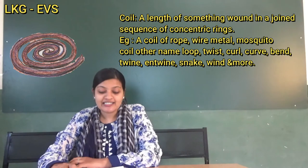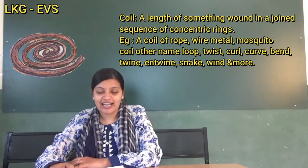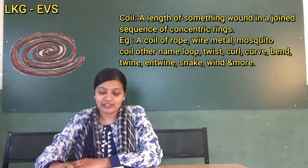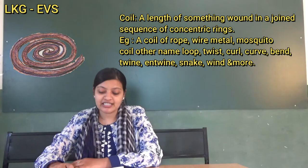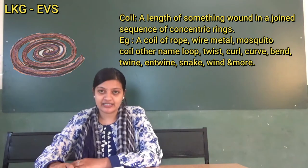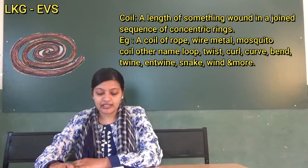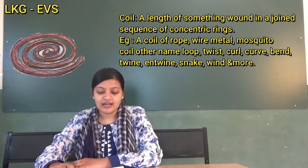Let's start. Coil, C-O-I-L. Coil: a length of something wound in a joined sequence of concentric rings. Example: a coil of rope, wire, metal, mosquito coil.